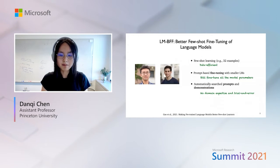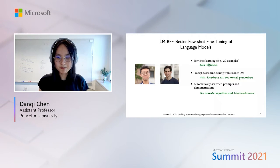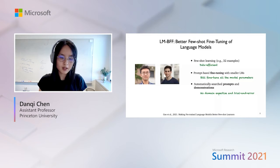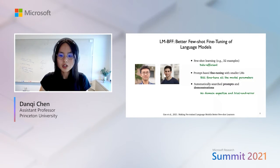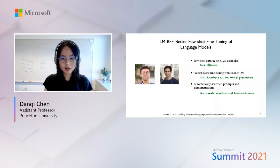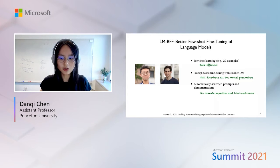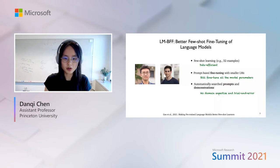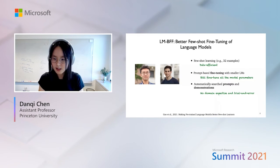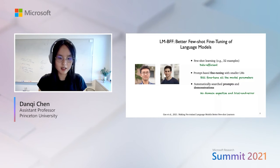Let's jump into the first work, LM-BFF, which stands for Better Few-shot Fine-tuning of Language Models. This work was done by my PhD student Tianyi Gao and a PhD student from MIT, Adam Fish. In this work, we focus on few-shot learning — in most cases, we only consider 32 training examples. We adopt prompt-based fine-tuning, using smaller language models but still fine-tuning all model parameters. We also propose methods to automatically search for prompts and demonstrations, removing the need for domain expertise and trial and error.